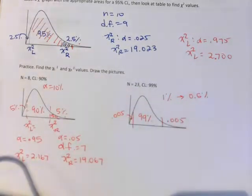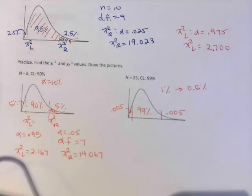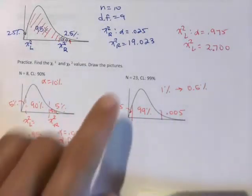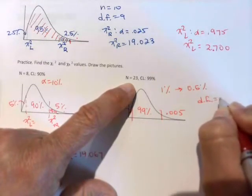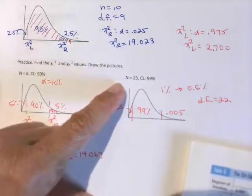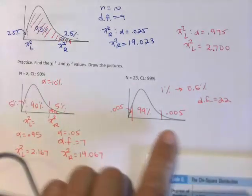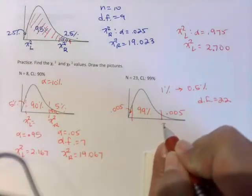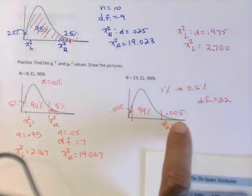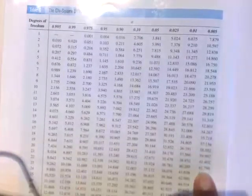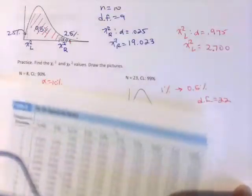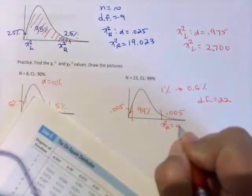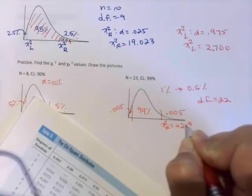Because my table doesn't have the percent symbol, it goes into the decimal versions. So .5% as a decimal is .005. And n is 23, so our degrees of freedom are 22. So we're going to be working on that row 22, so for my chi-square right, I'm going to look up .005, which is the furthest right column, and I'm going to come down to the 22, 42.796, there's no need to round.